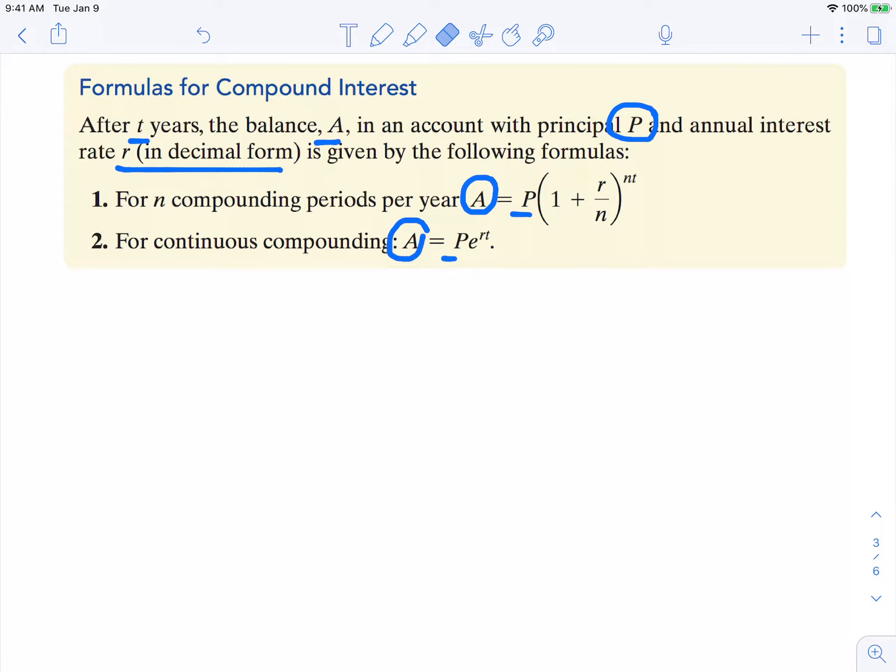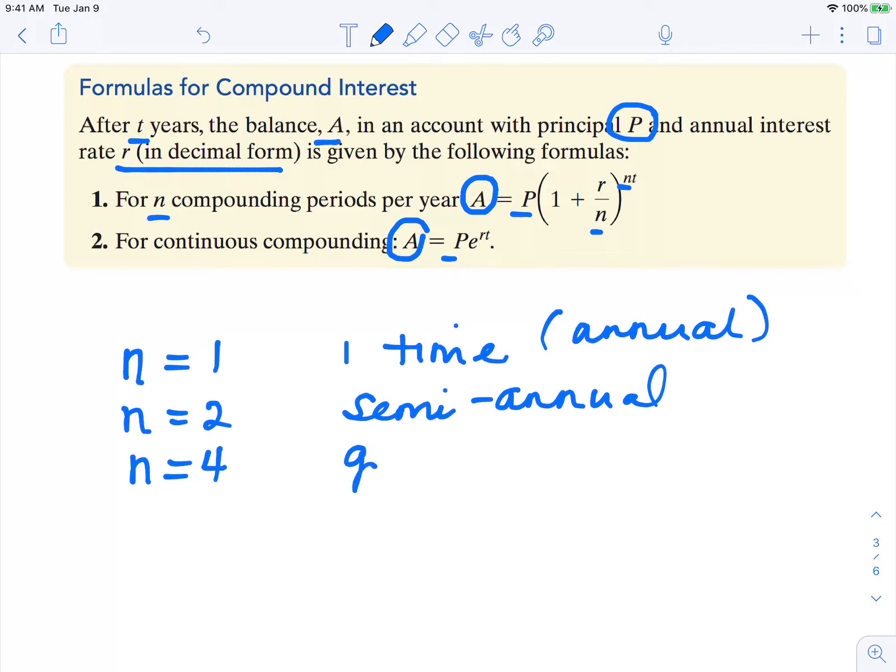N represents the number of compounds per year. If N equals 1, that means it compounds one time annually. If N is 2, we say that is semi-annual. If N is 4, we would say it's compounding quarterly, like every 3 months.